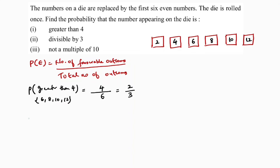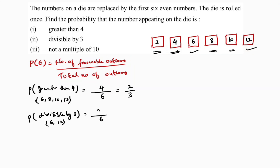Next question: probability of a number divisible by three. Total outcomes are six. Checking each: two — no, four — no, six — yes (three times two), eight — no, ten — no, twelve — yes. So there are two favorable outcomes: six and twelve. Probability is two by six, which is one by three.